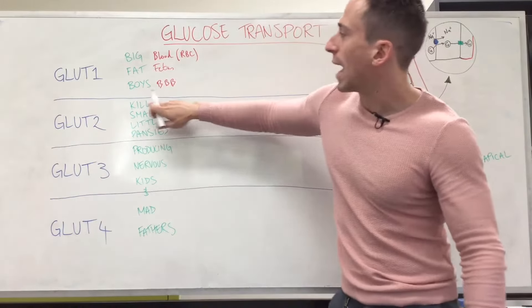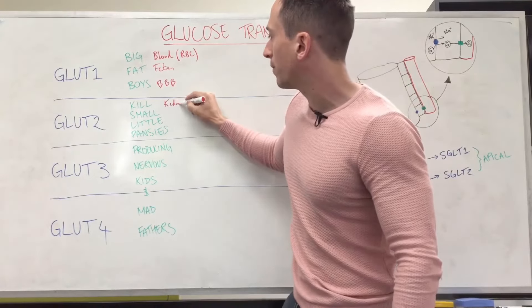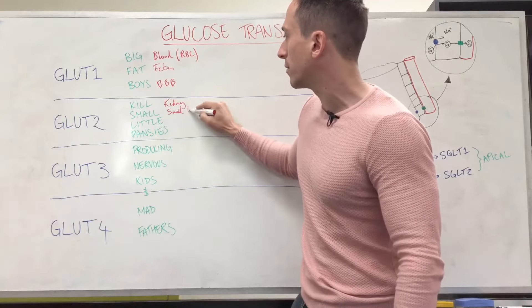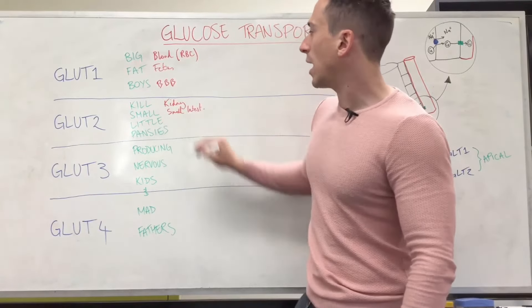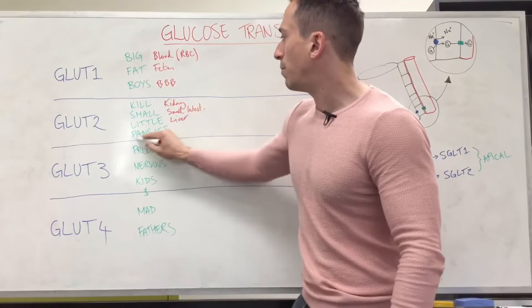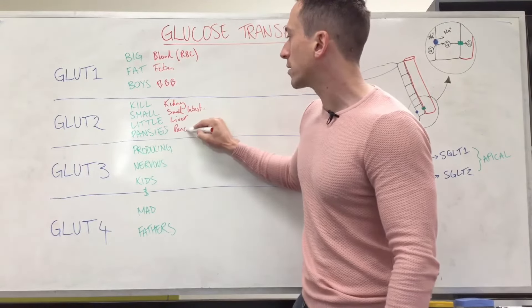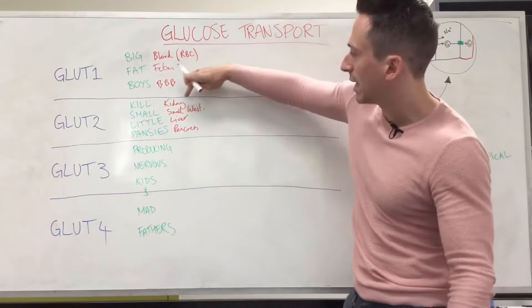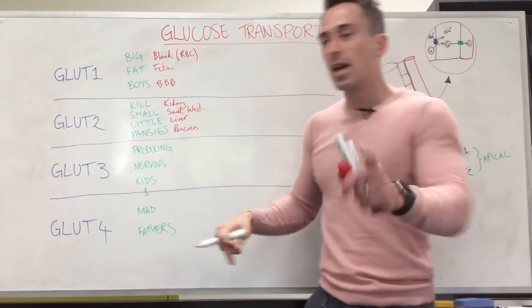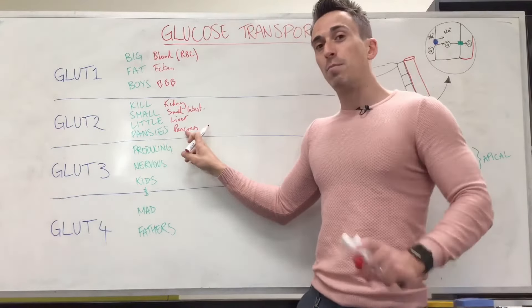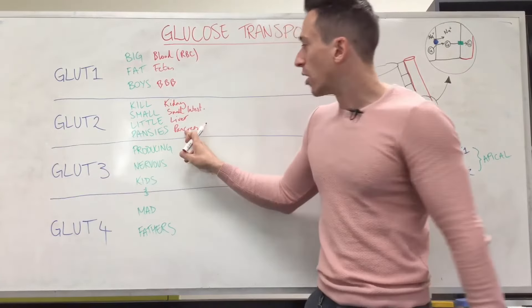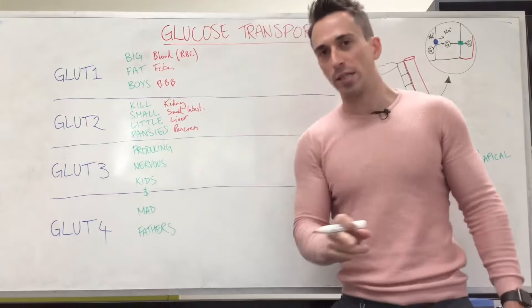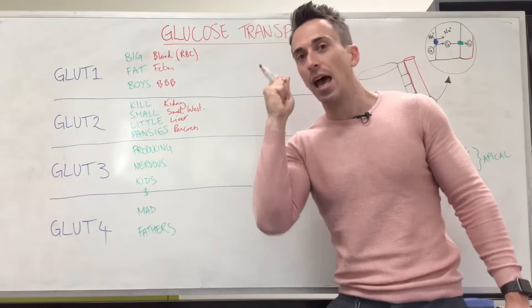For GLUT-2: KI stands for kidneys, small stands for small intestines, LI stands for liver, and PA stands for pancreas. So all these tissues use a GLUT-2 transporter to get glucose. The pancreas needs to pick up glucose to release insulin — specifically at the beta cells of the pancreas, where we have GLUT-2 transporters. These are the glucose-sensing areas.